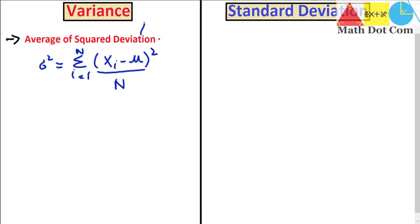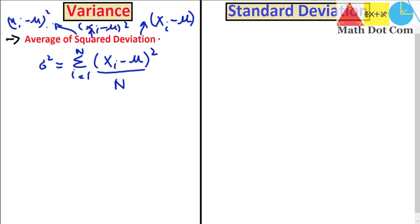Deviation is the difference of the data value from the mean value. You then take the square of all these deviation values, and then take the average — meaning you add all the squared deviations and divide by the total number of data values in the given data set. That is how the definition of variance is explained.